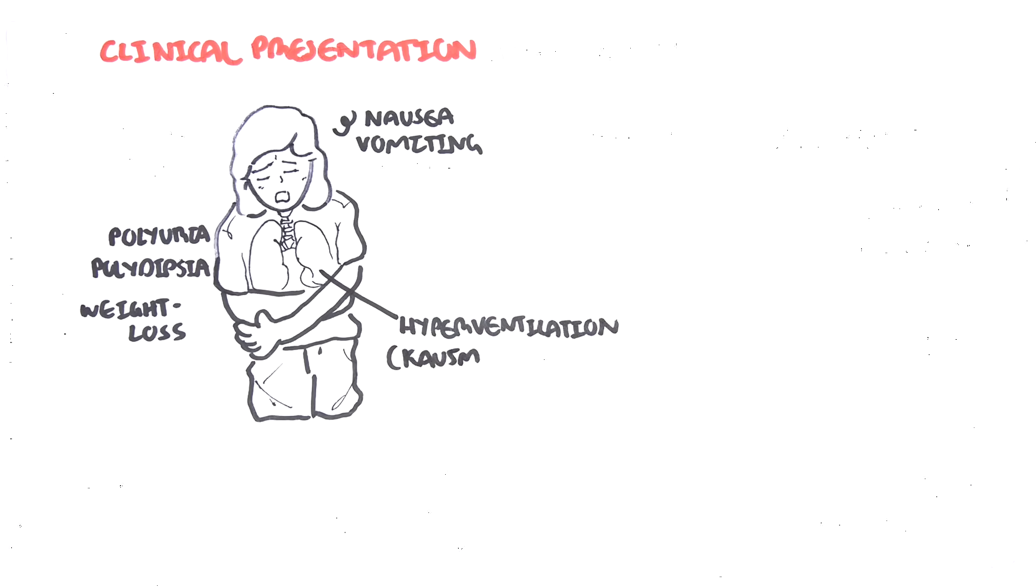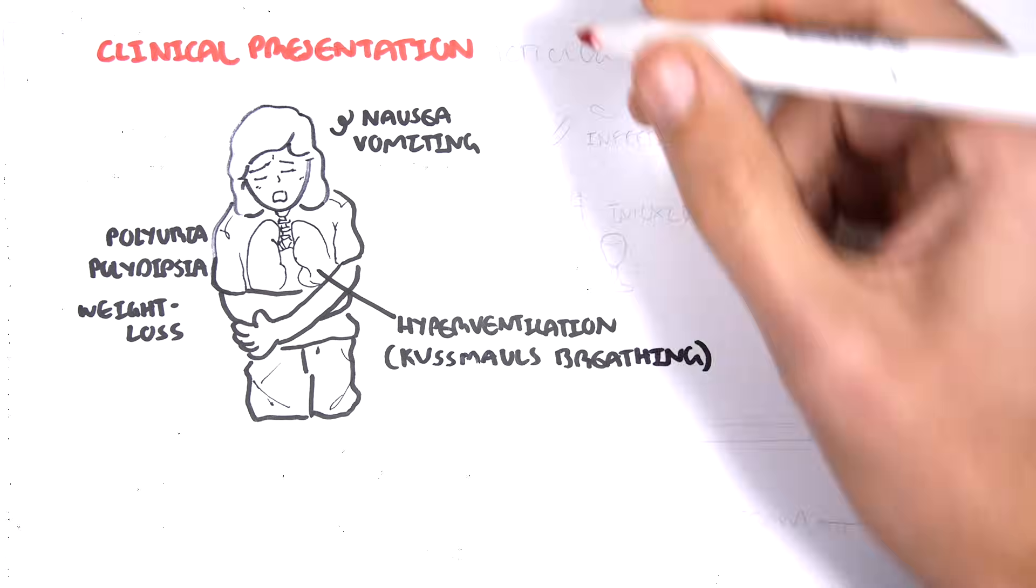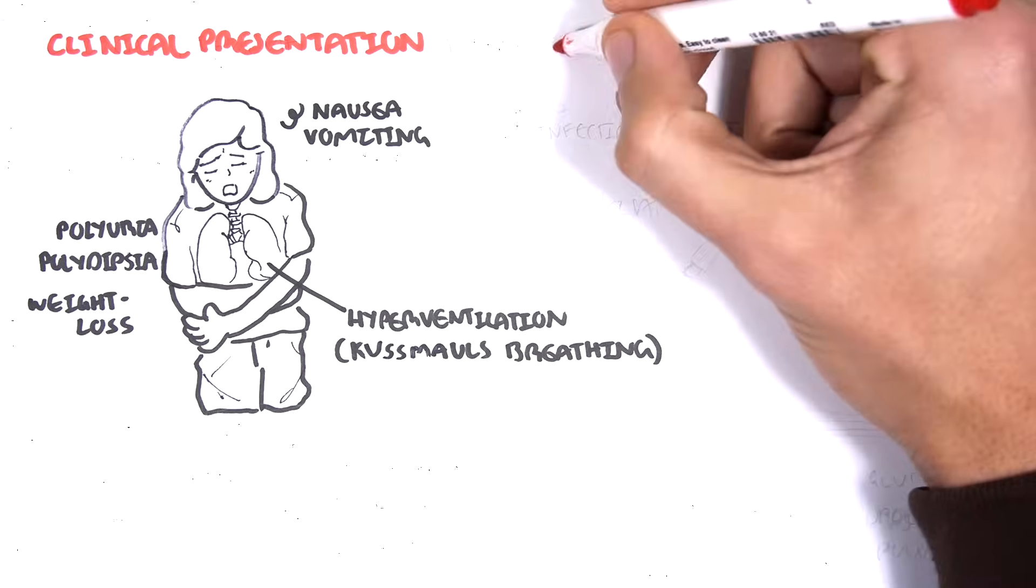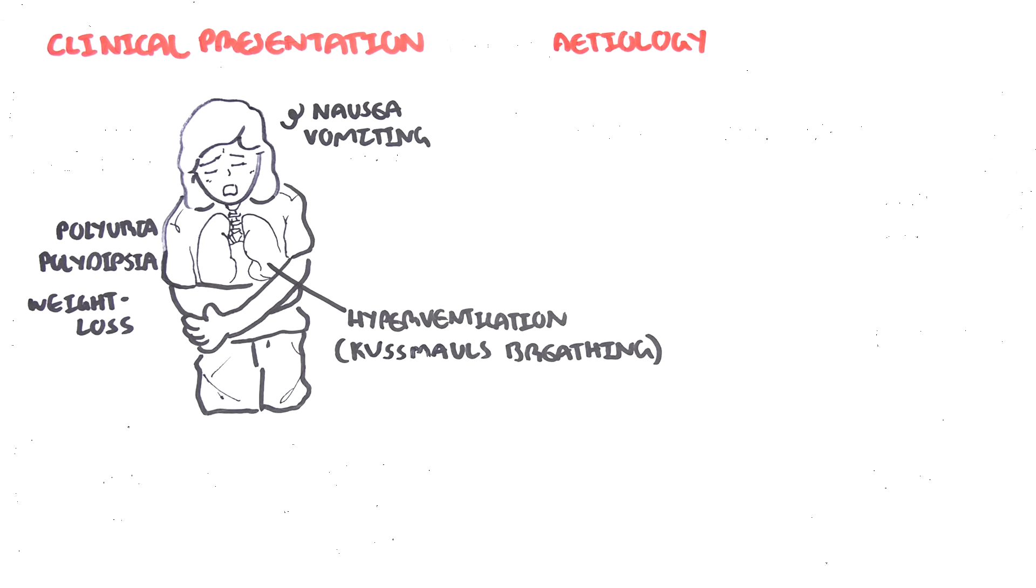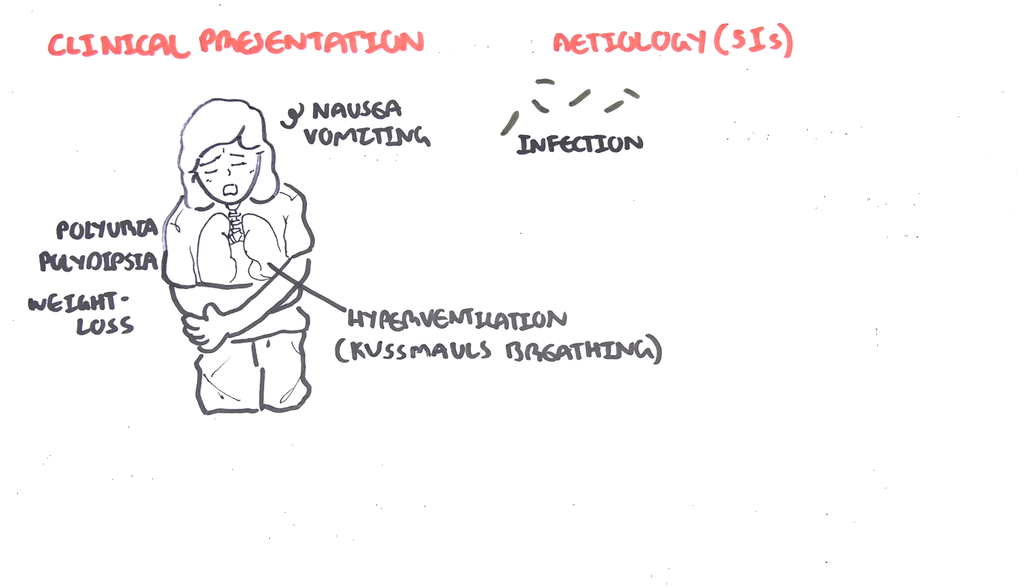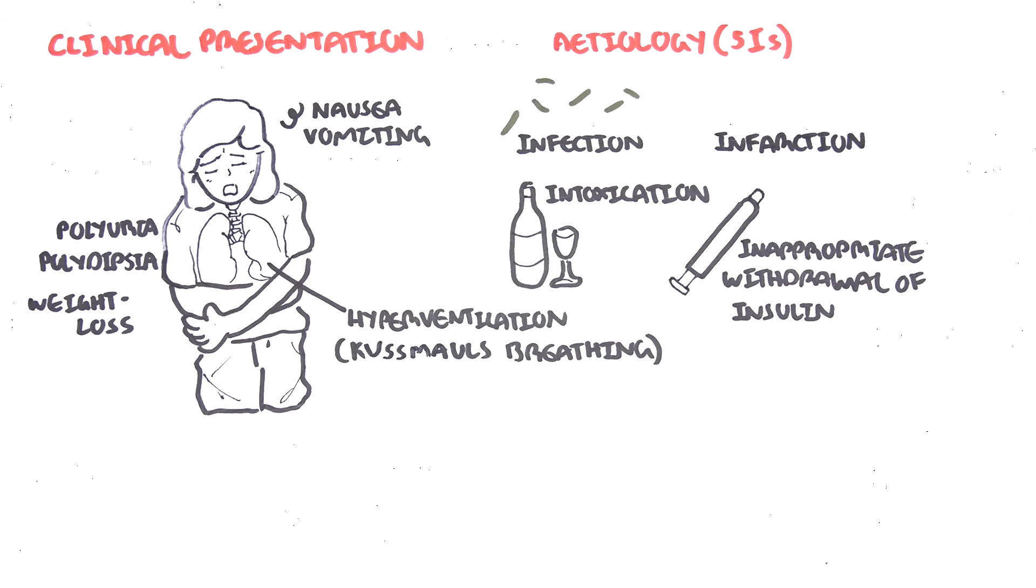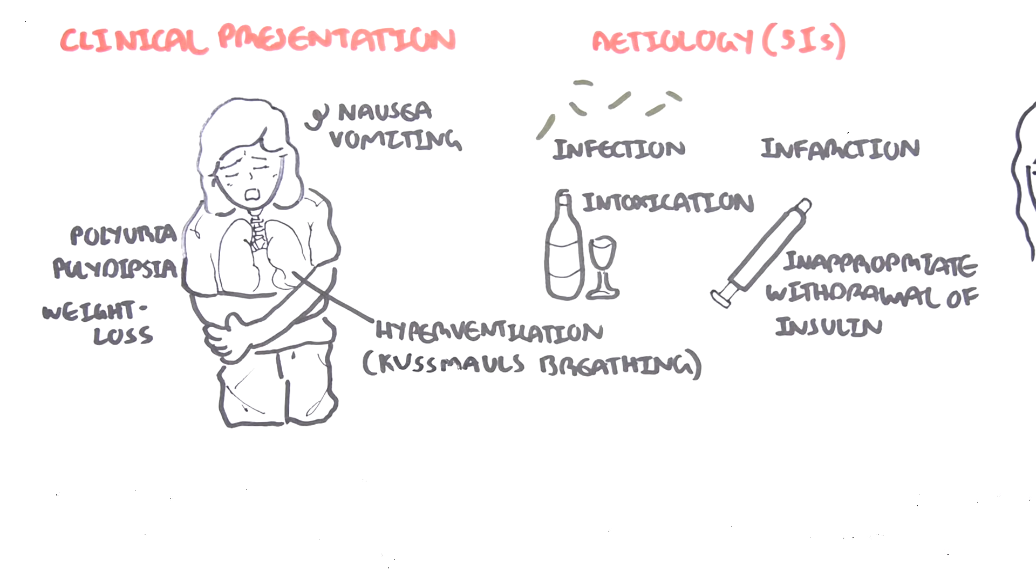Now, diabetic ketoacidosis doesn't occur out of the blue. There's usually some triggers. And these triggers, these etiologies, can be remembered as the five I's. The five I's are infection, intoxication, inappropriate withdrawal of insulin, infarction, and intercurrent illness.